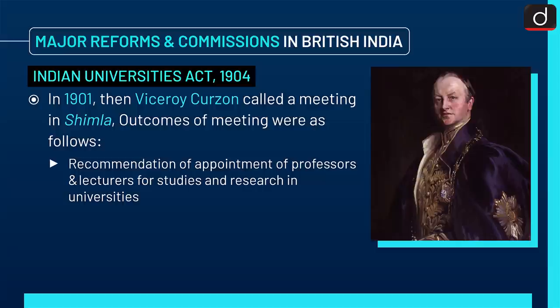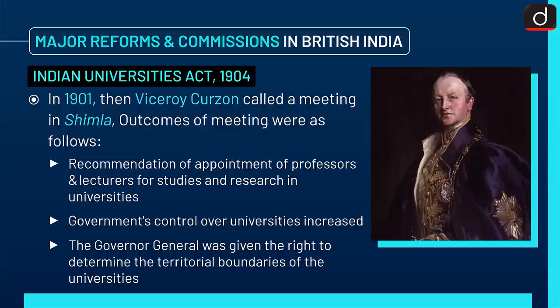Indian Universities Act 1904: In 1901, Viceroy Curzon called a meeting in Shimla. Outcomes included recommendations for appointment of professors and lecturers for studies and research in universities. Government control over universities was increased, and the Governor General was given the right to determine the territorial boundaries of universities.